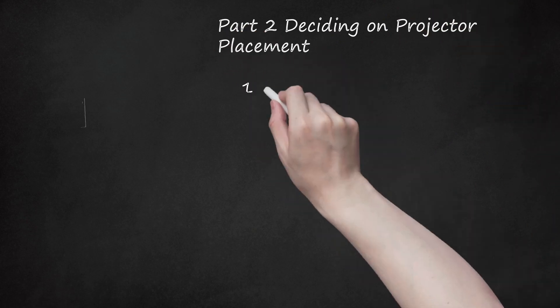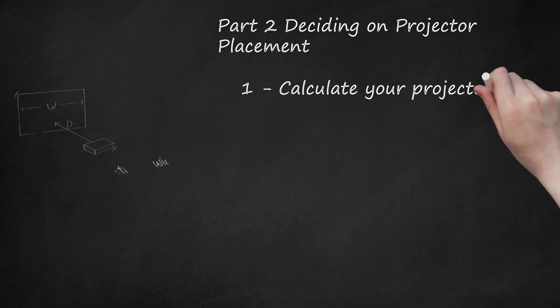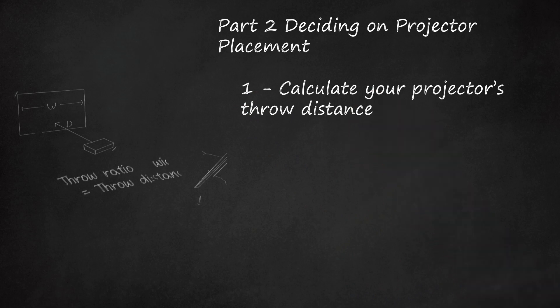Part 2: Deciding on Projector Placement. 1. Calculate your projector's throw distance. Throw distance measures the distance between your screen and your projector's lens. You calculate it using your projector's throw ratio, which should be listed in the instruction manual as either a single number, for projectors without optical zoom, or a range of numbers.